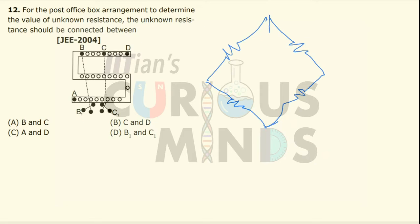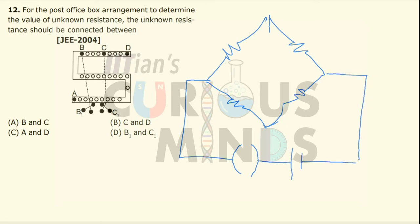To this Wheatstone network we connect a main driving cell key, and at the center we connect another key along with a galvanometer. The galvanometer should give zero current — that is how we determine the unknown resistance.